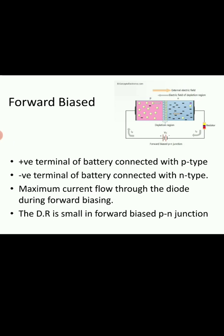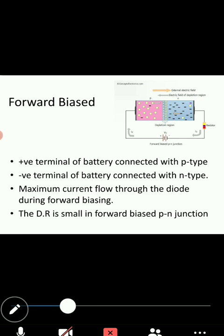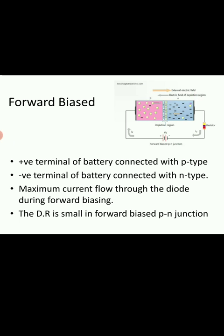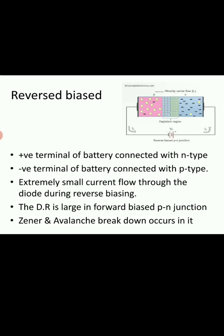I will again explain forward bias at that time, because this online session was declared only this morning, so right now I am not having that PDF. Here you can see: when we are connecting the positive terminal of a battery to the P-type semiconductor and the negative terminal to the N-type semiconductor, the width of the depletion region will decrease. When the value of supply voltage reaches over the barrier potential, the depletion region will get removed and electrons will start to move, due to which current will start to flow. That is the working principle of forward bias diode. The V-I characteristic diagram we will see in tomorrow's session. Now we will see reverse bias diode.